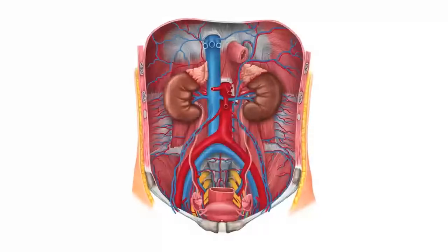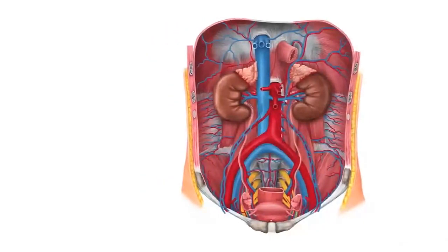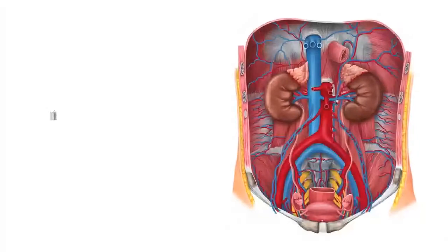We are looking at the interior view of the abdomen if we were to strip all the organs that you can find on the more ventral side of the abdomen, and we're left with then the kidneys. They're found a bit more posteriorly because the kidneys are retroperitoneal organs.